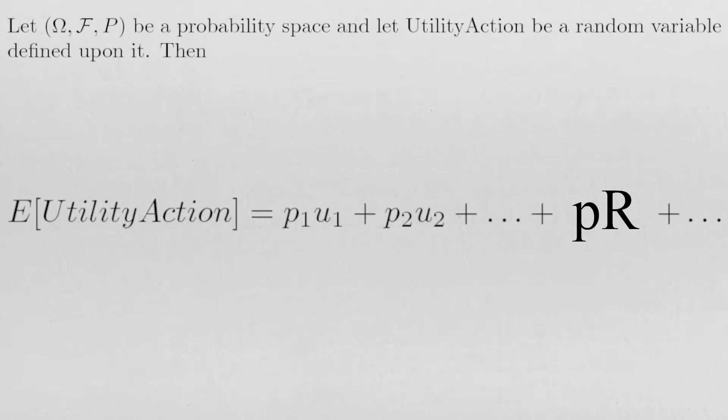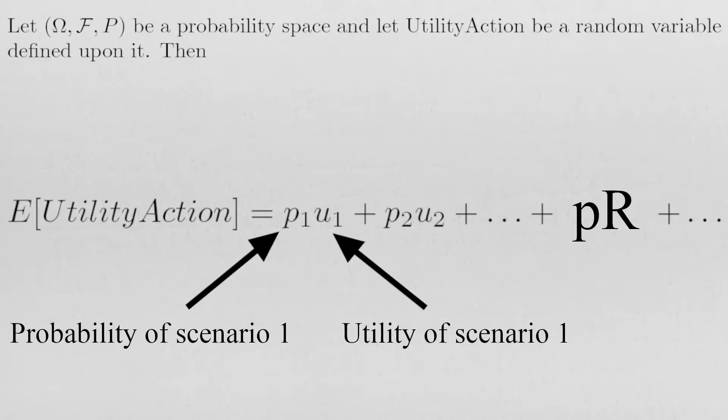In considering the expected amount of happiness that a certain action can cause, we give explicit importance to how the action interfaces with societal rules and laws. If a consequence of an action erodes the faith in a rule that produces positive utility, then we will single out this negative utility component in the calculations.